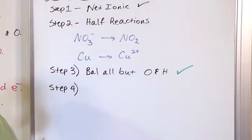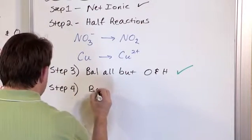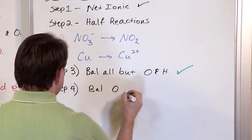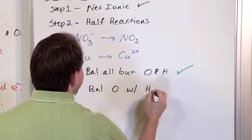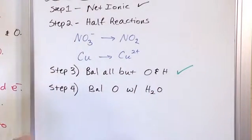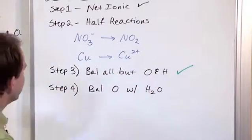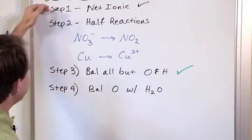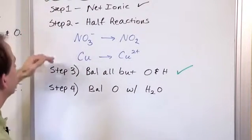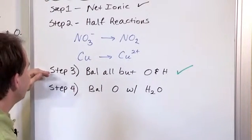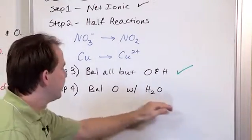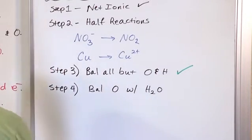Step four is we're going to balance the oxygen with H2O. So hopefully this process is starting to get a little familiar. First, make sure it's a net ionic. Second, do the half reactions. Third, balance everything but the hydrogen and oxygen. Fourth, we balance the oxygen with water. So that's the next thing.